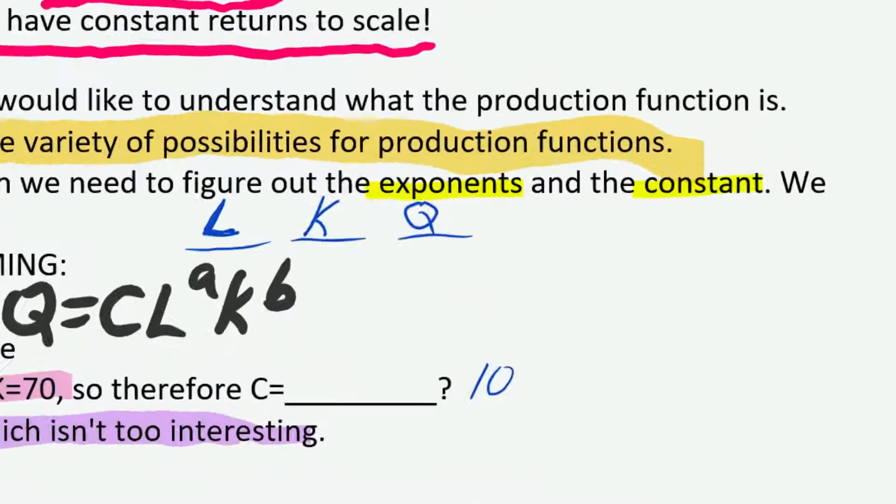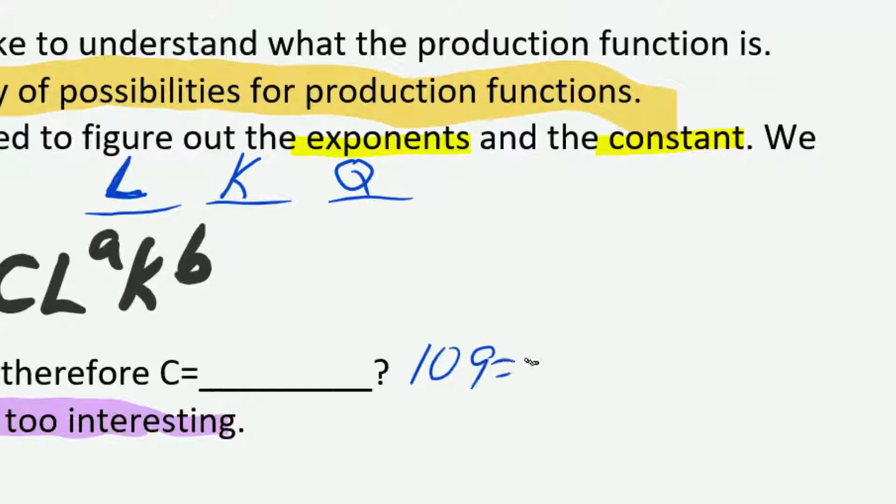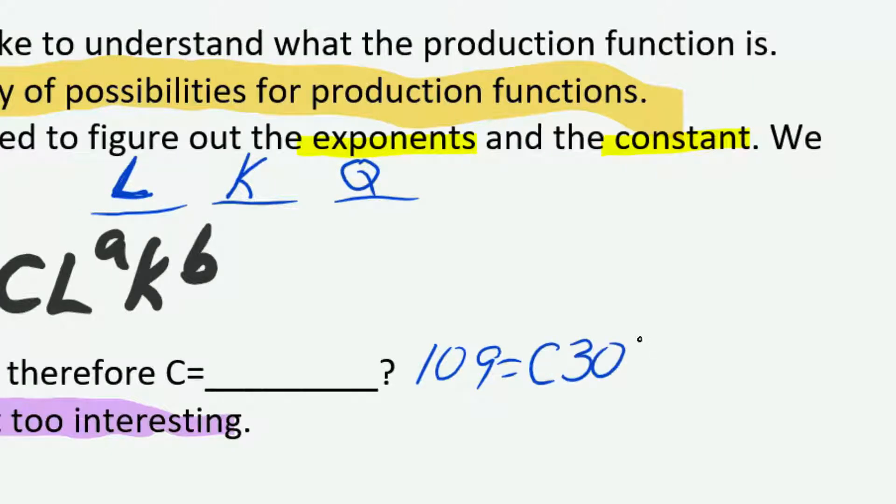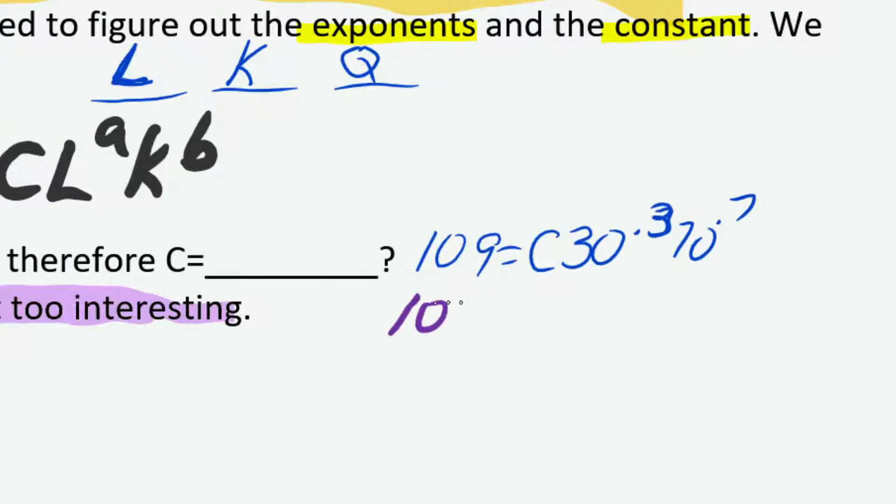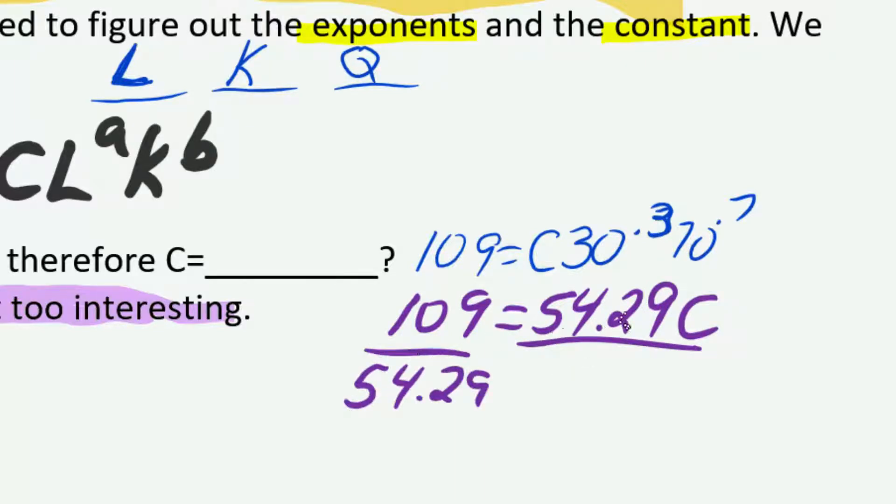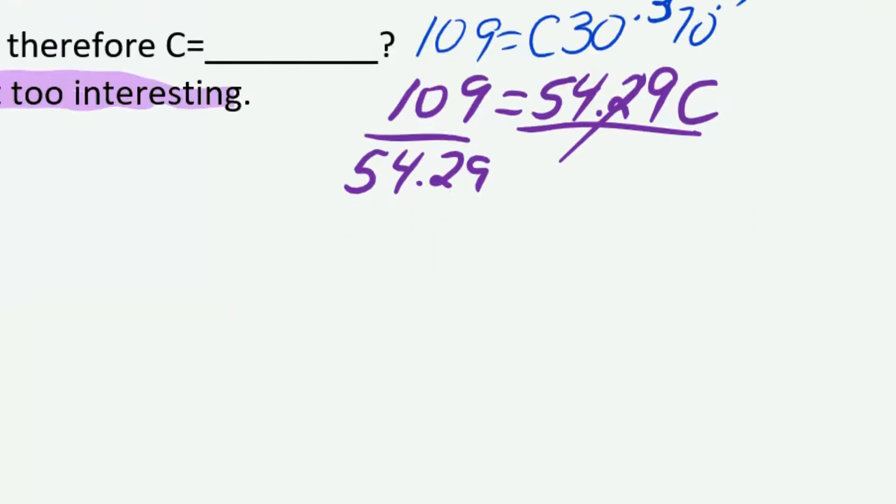So 109 equals C times 30 to the 0.3 times 70 to the 0.7, and they just want us to solve that. If we plug in 30 to the 0.3, multiply that times 70 to the 0.7, we get 54.29 roughly. So 109 equals 54.29 times C. Divide both sides by that 54.29 and cancel on that side, and we get that the constant is going to be roughly 2, a little bit bigger than 2.